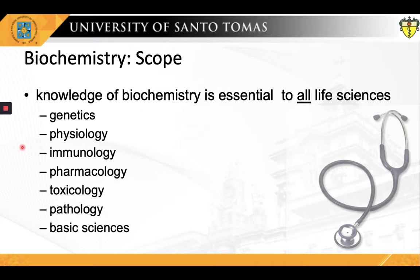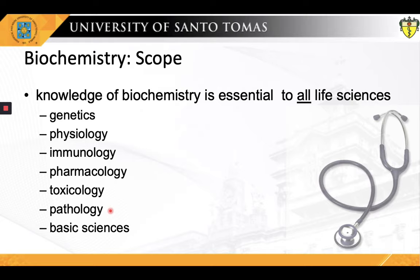The biochemistry of the nucleic acids lies at the heart of genetics. In turn, the use of genetic approaches has been critical for elucidating many areas of biochemistry. Physiology, the study of body function, overlaps with biochemistry almost completely. Immunology employs numerous biochemical techniques, and many immunologic approaches have found wide use by biochemists. Pharmacology and pharmacy rest on a sound knowledge of biochemistry and physiology. In particular, most drugs are metabolized by enzyme-catalyzed reactions. Poisons act on biochemical reactions or processes — this is the subject matter of toxicology. Biochemical approaches are also being used increasingly to study basic aspects of pathology, such as inflammation, cell injury, and cancer. Many workers in microbiology, zoology, and botany employ biochemical approaches almost exclusively. These relationships are not surprising, because life as we know it depends on biochemical reactions and processes.